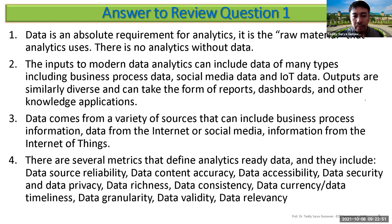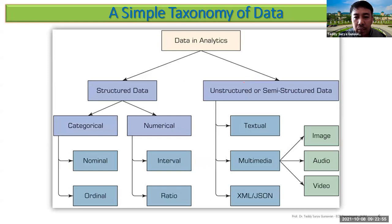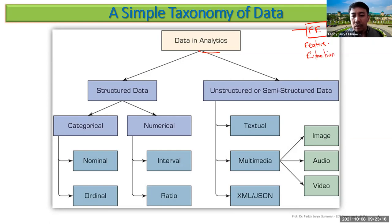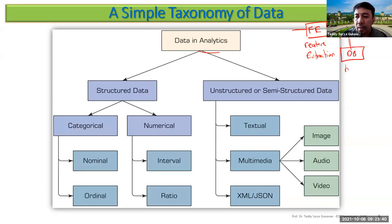Now let's look at a simple taxonomy of data analytics. When you go into machine learning or deep learning, you have input data with feature extraction — extracting unique characteristics, or representation learning. To determine whether a person is male or female, you identify features like hair length or presence of a mustache. You then have a classifier or regression module, and you train the system with a database before testing and validation.